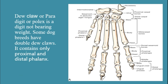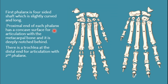The first phalanx of dog, which is the proximal phalanx, is a four-sided shaft which is slightly curved and contains a long body. It has three parts: the base, the body, and the head. The base of the first phalanx is present proximally and contains an articular surface for articulation with the metacarpal bones.